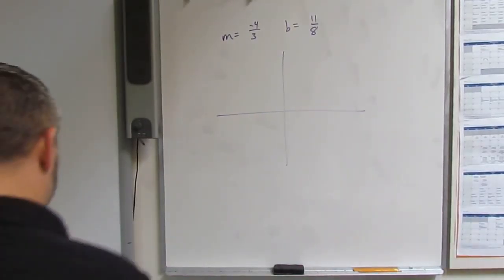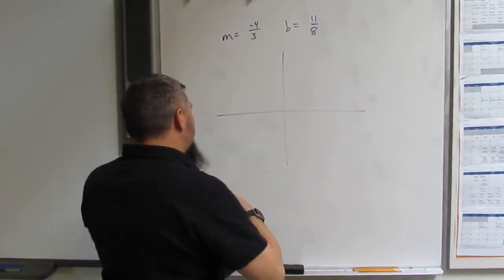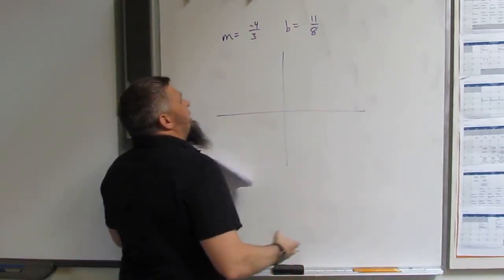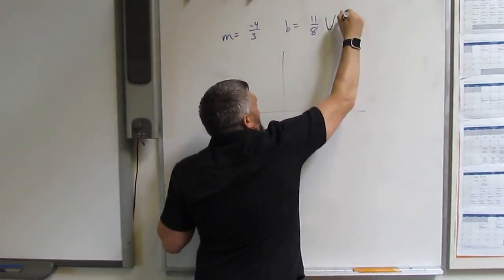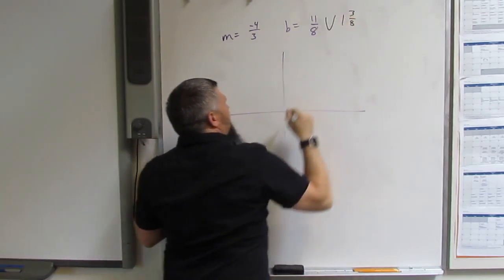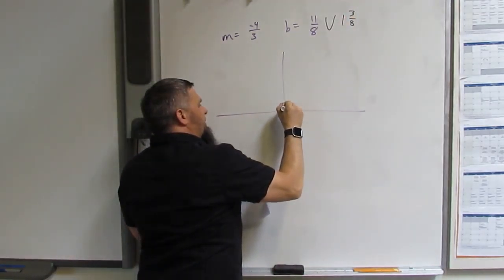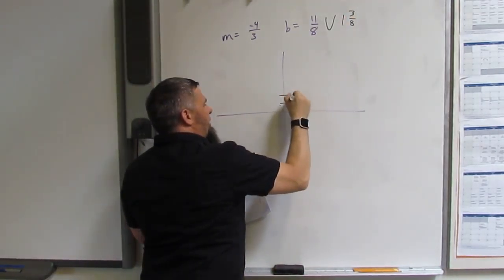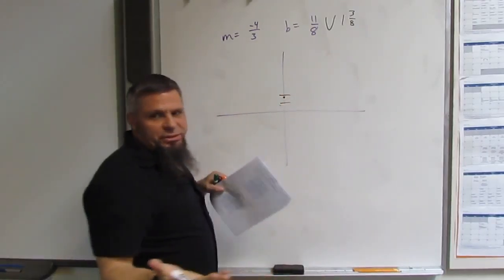Alright, so if I want to graph this, I've got to go to my y-intercept. My y-intercept is 11 over 8, or 1 and 3/8. Now we put it at about here.